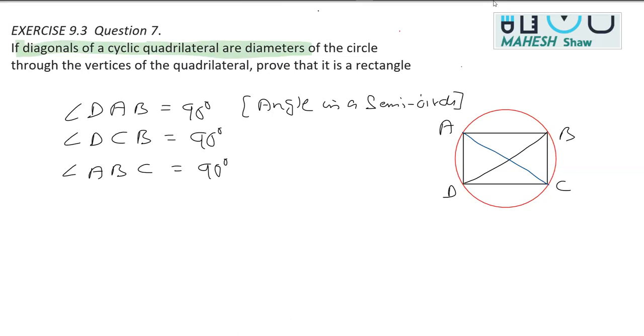And finally, looking into this, considering the same diagonal AC, this time considering this semicircle, we can say this angle D will be 90 degrees. The reason remains the same. Angle ADC is equal to 90 degrees.